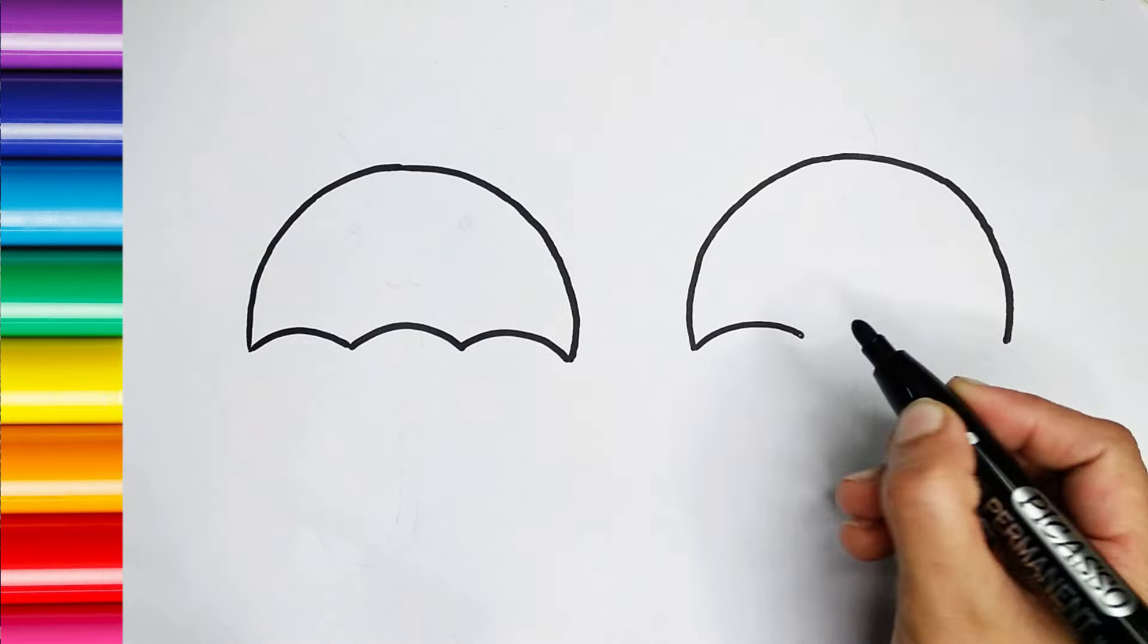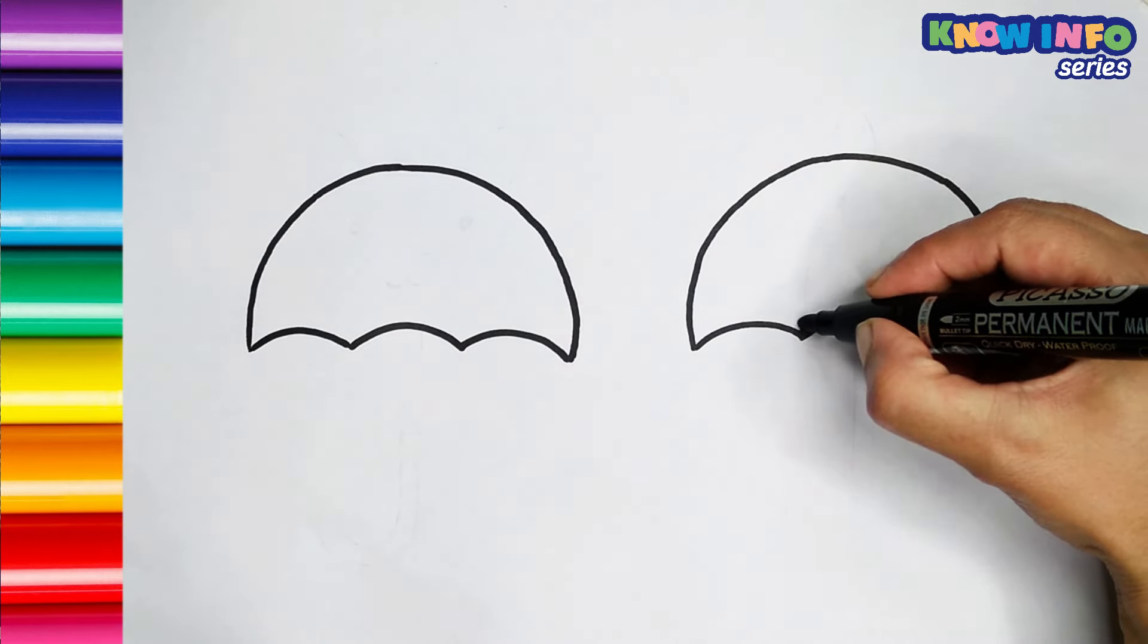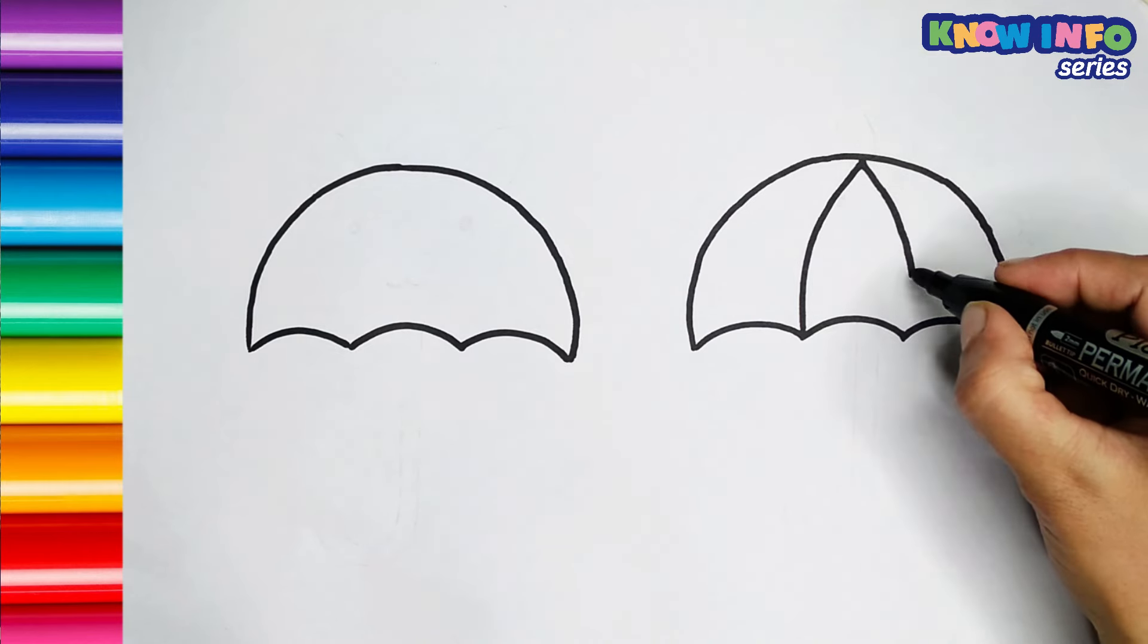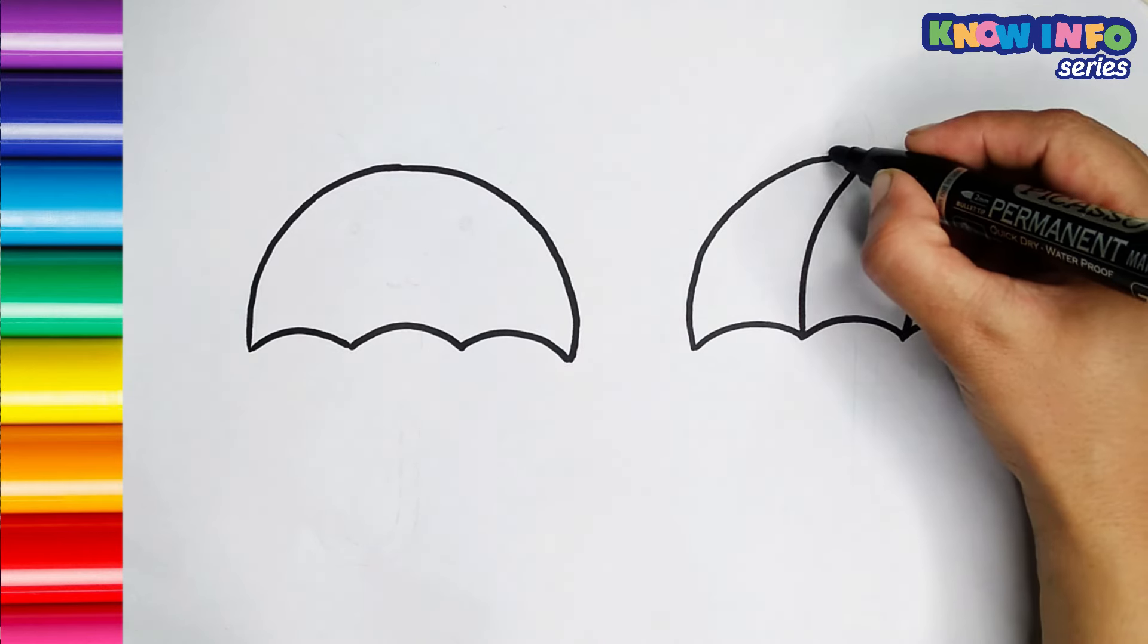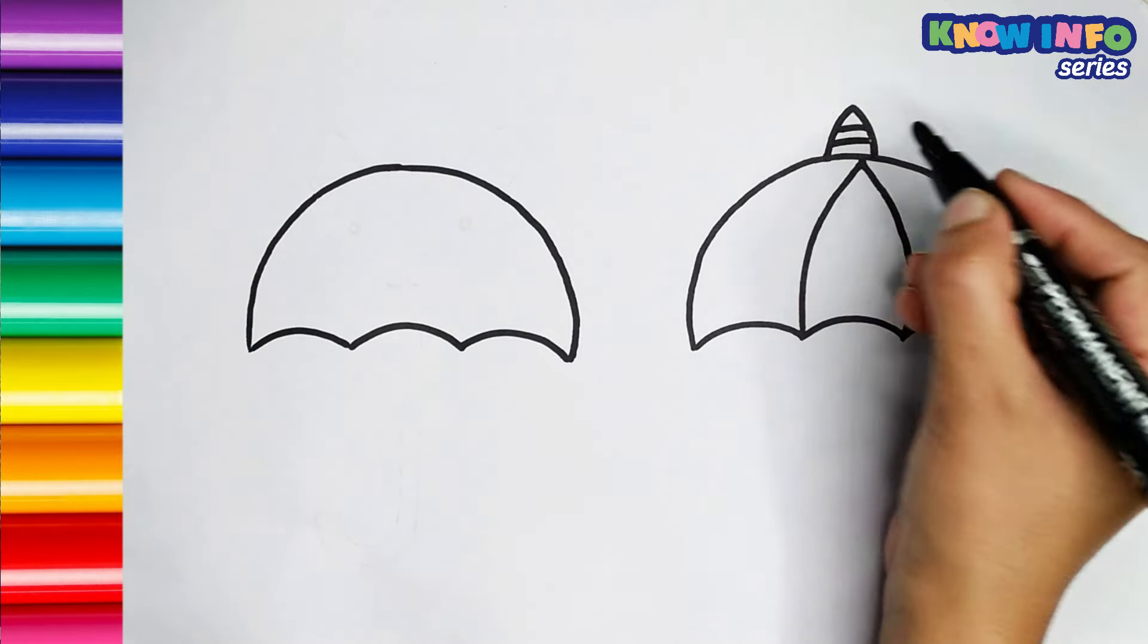And here again, we draw three curved lines to complete the second canopy. Draw two curved lines inside the canopy to create the ribs of the umbrella. Add some details to the umbrella to make it look more decorative.